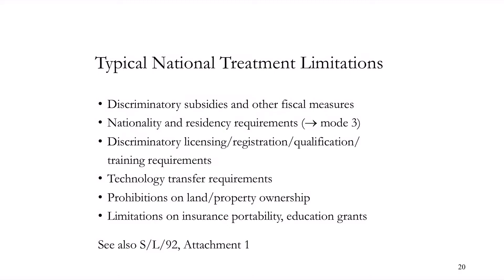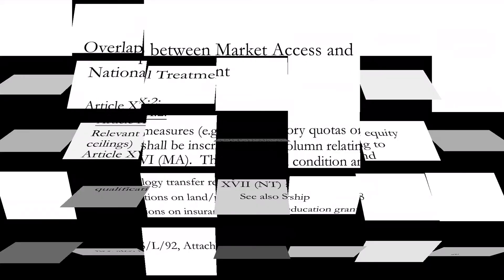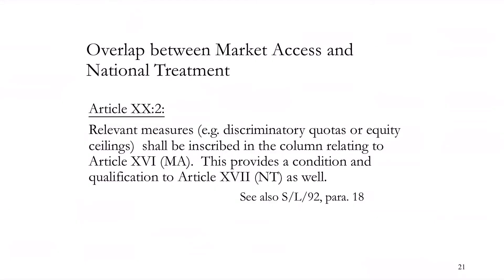There can be cases where there is an overlap between market access and national treatment limitations — for example, a discriminatory quota or equity ceiling based on the origin of the service supplier. In such a case, it is both a numerical quota (market access restriction) and discriminatory (national treatment restriction). According to GATS, it should be inscribed in the column relating to market access restrictions, and this would be understood to also provide a condition and qualification on national treatment — you do not need to list the same restriction in the national treatment column again.